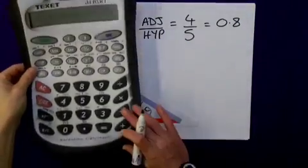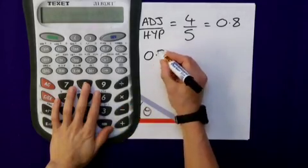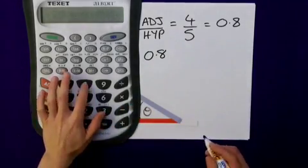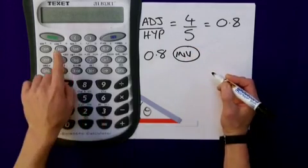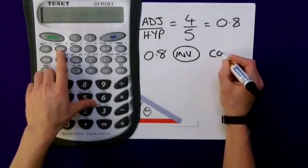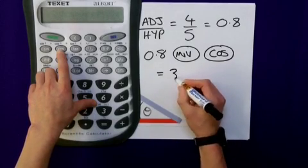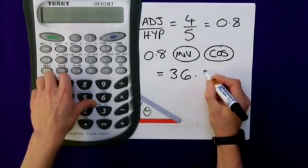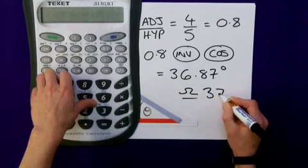The clever bit again, going back to this model this time, so what I would type in here would be the 0.8, so I put the number in, 0.8, then the inverse button, and then this time it would be the cosine button, COS. And that will give me an answer, once again, 36.87 degrees, approximately 37 degrees.